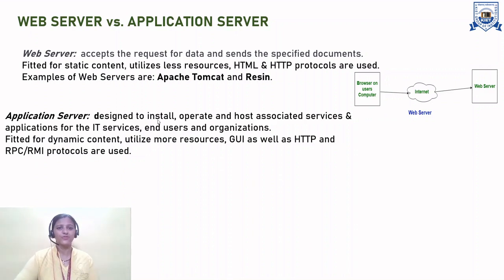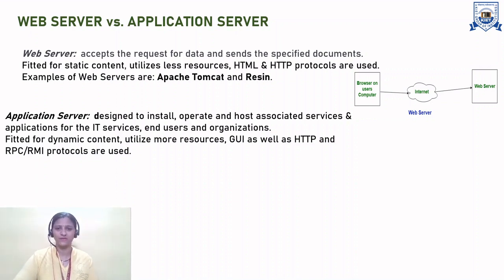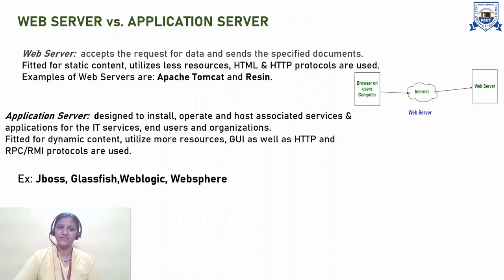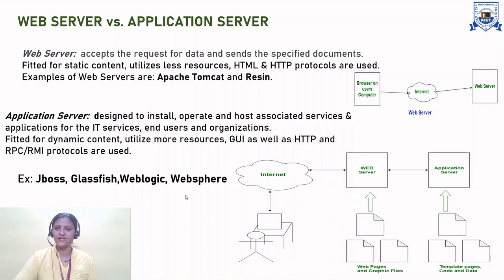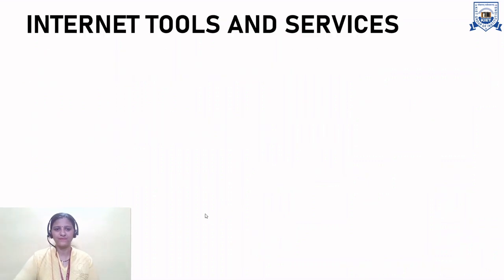Application server is designed to install, operate, and host associated services and applications for IT services, users, and organizations. It is suited for dynamic content and utilizes more resources in comparison to the web server. GUI as well as HTTP, RPC, and RMI protocols are used. Examples of application servers are JBoss, GlassFish, WebLogic, and WebSphere. This illustrates the working of the web server, application server, and the role of the internet between them.